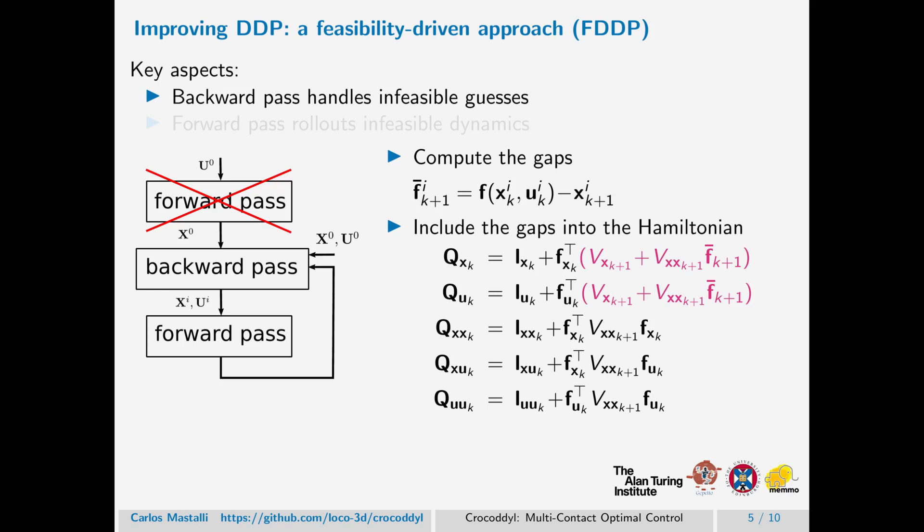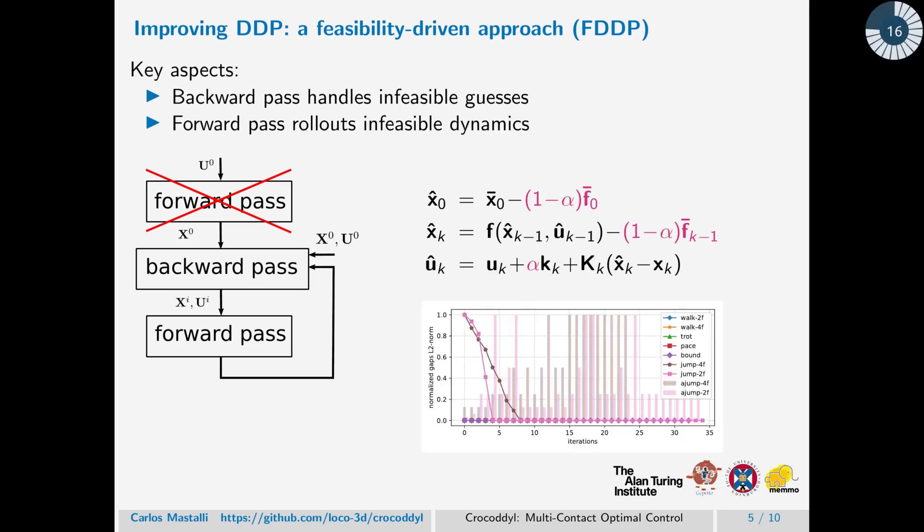Additionally, it's important to keep infeasibility during the forward pass when trying different directions. For that, we have analyzed the KKT problem for a multiple shooting algorithm, and we have noted that there is a convergence rate of the gap defined by 1 minus alpha, where alpha is the step length.